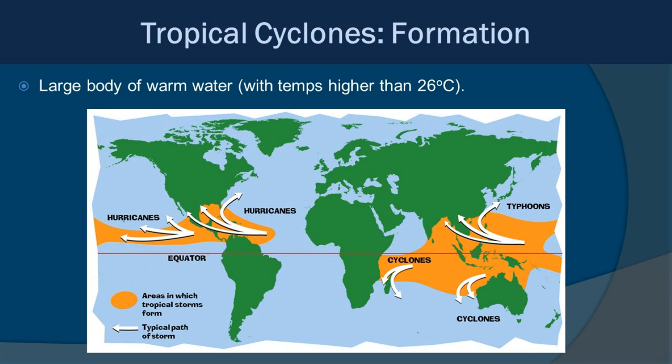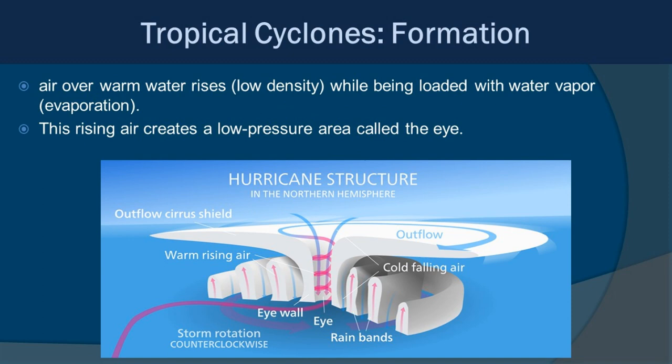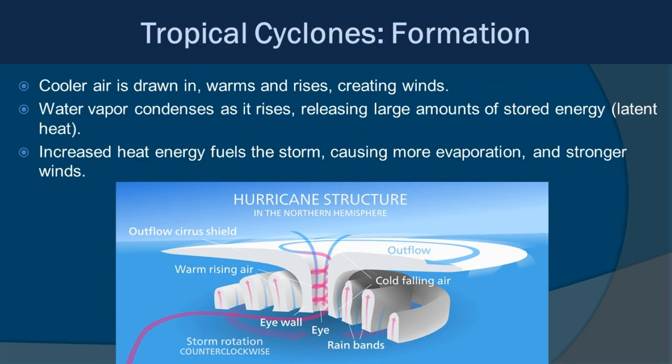It really is that key of warm water that fuels these storms. As the air over warm water rises due to its low density, it becomes loaded with water vapor through evaporation. That rising air creates a low-pressure area that eventually forms the eye of the storm. As the storm develops and strengthens, it pulls in cooler air, which then warms and rises, creating those winds. As water vapor condenses while rising and cooling, it releases large amounts of stored energy — that latent heat — which increases heat energy, causing more evaporation and stronger winds.